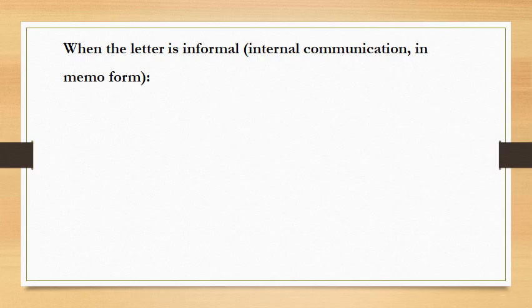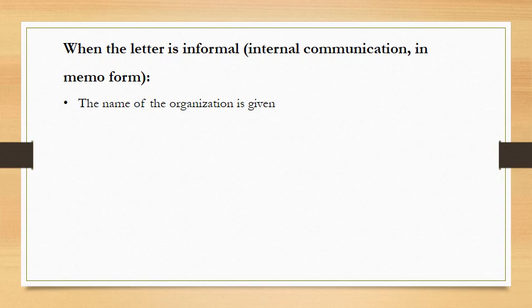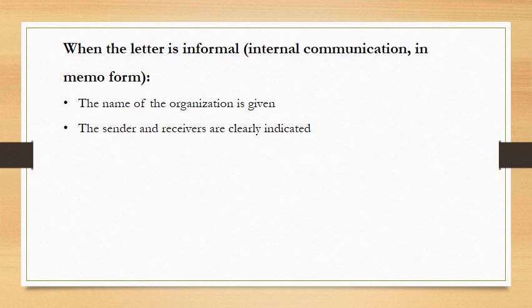When the letter is informal — when it is on a memo page for people inside the organization — there are slight differences. The name of the organization will appear at the top. In the workplace you will normally have ready-printed stationery, but for exam purposes remember to put the name of the organization at the top. Then you will have a 'To' and a 'From' where you clearly indicate the sender and the receivers. Telephone extension numbers are given because this is internal communication happening inside the organization — a personal cell phone number or an extension number where people can reach the sender.